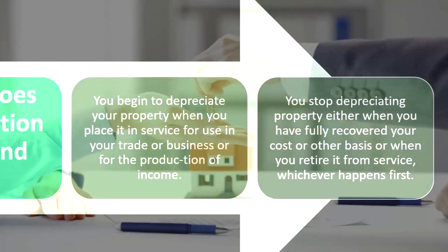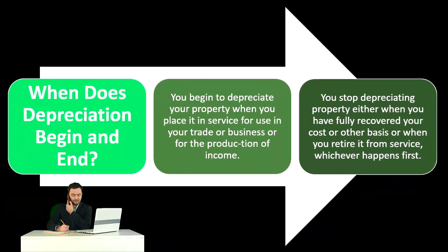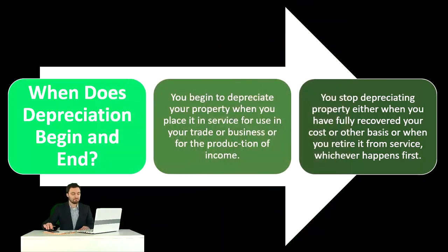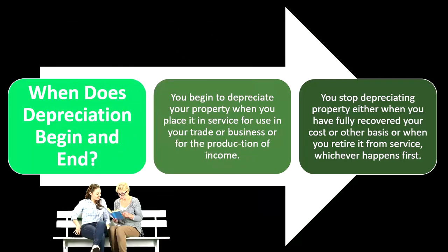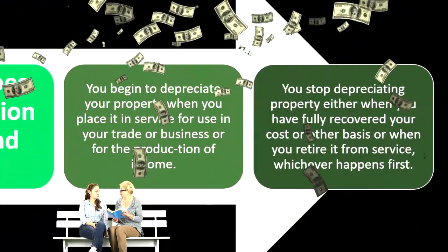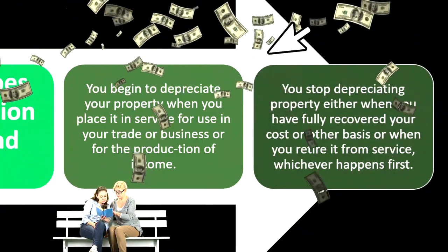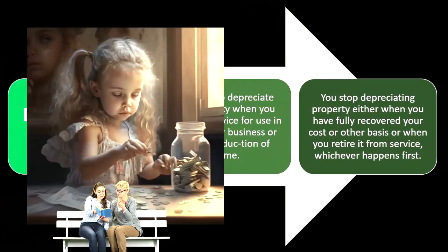You stop depreciating property either when you have fully recovered your cost or other basis, or when you retire it from service, whichever happens first. For example, if you purchase something for $100,000, you put it on the books when you place the equipment in service for your trade or business. If you had shipping costs to get it ready and in service, you'd include those costs at the point it's in service for business use.